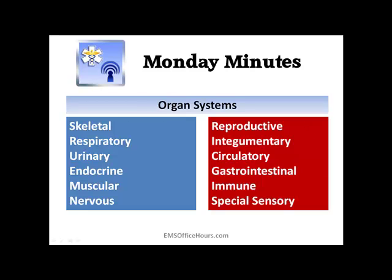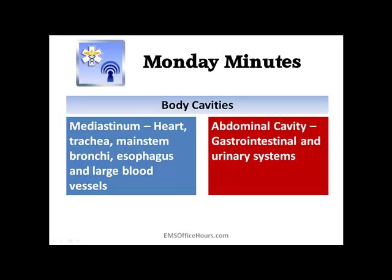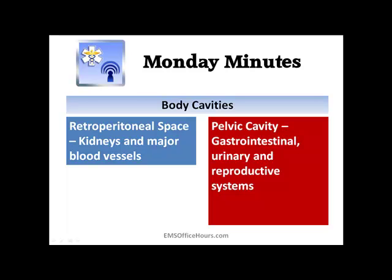The body cavities house some of these systems. Your cranial and spinal canal house the nervous system and the special sensory system. Your thoracic cavity holds your respiratory and cardiovascular systems. Your mediastinum contains your heart, trachea, main stem bronchi, esophagus, and large blood vessels. Your abdominal cavity holds your gastrointestinal system and part of your urinary system. You have your retroperitoneal space, which contains your kidneys and major blood vessels. And your pelvic cavity also holds some of your gastrointestinal, urinary, and reproductive systems.